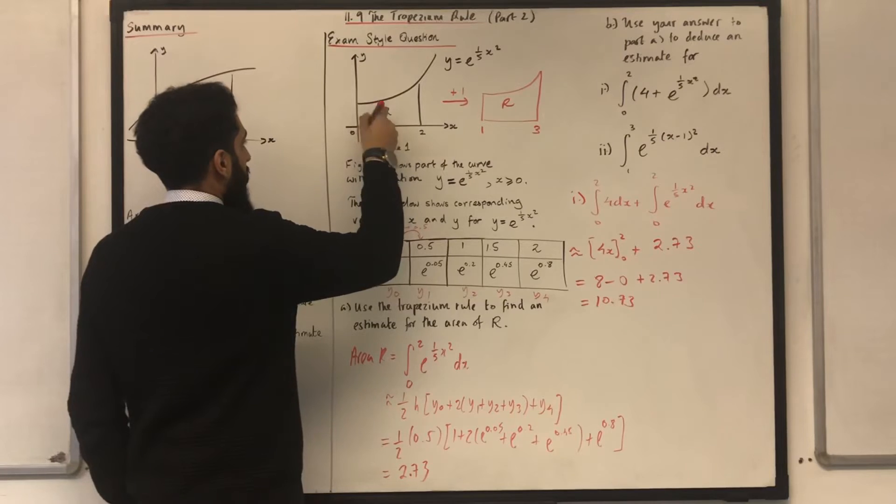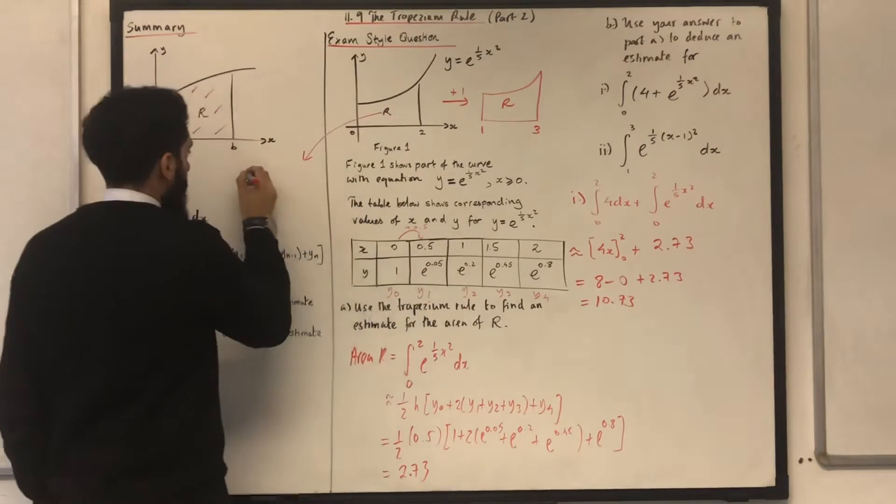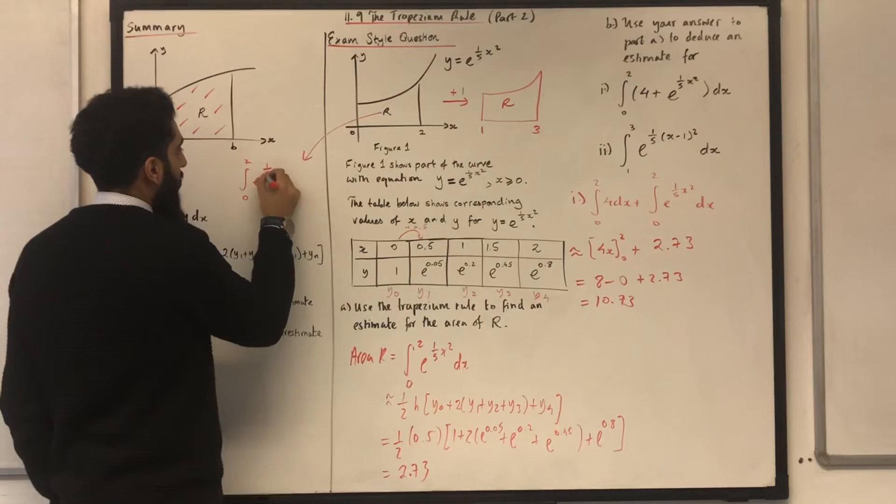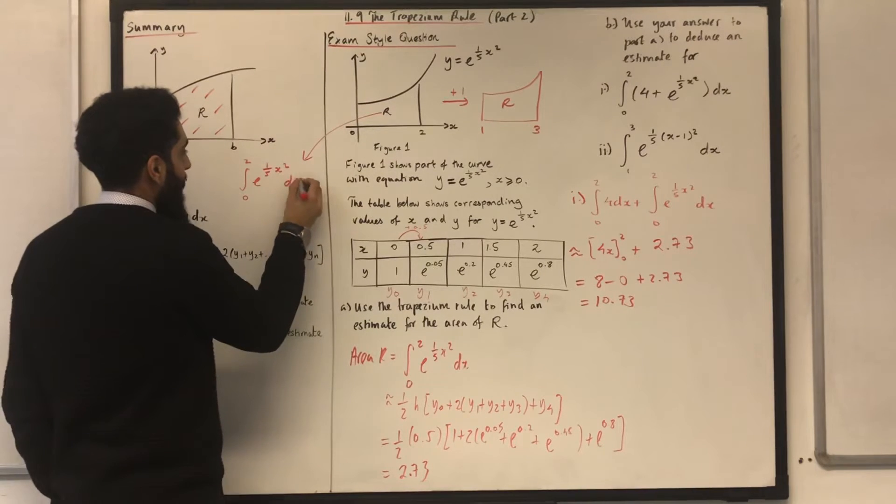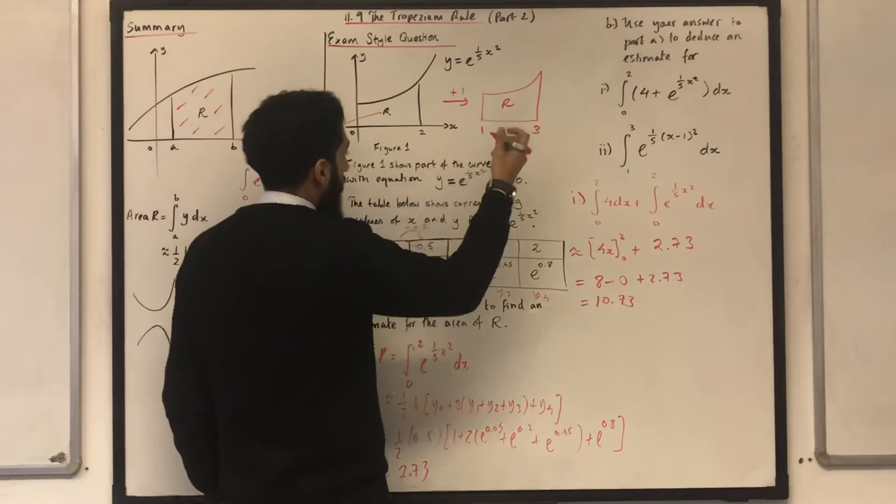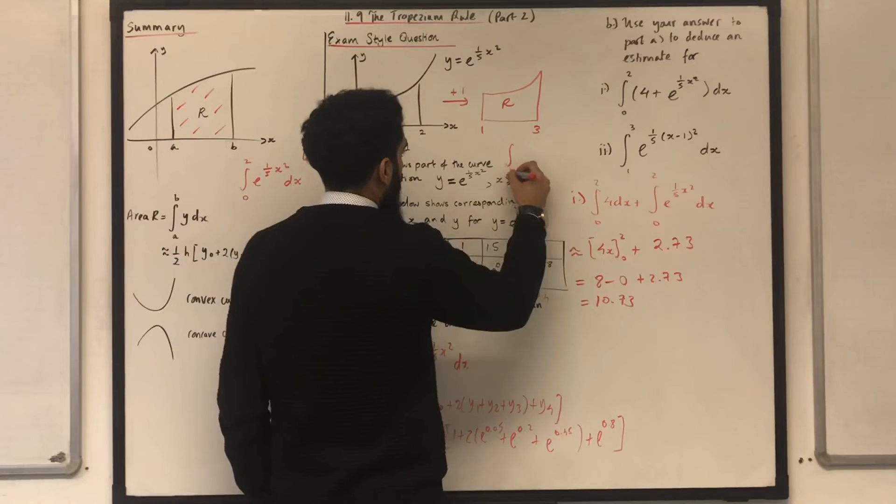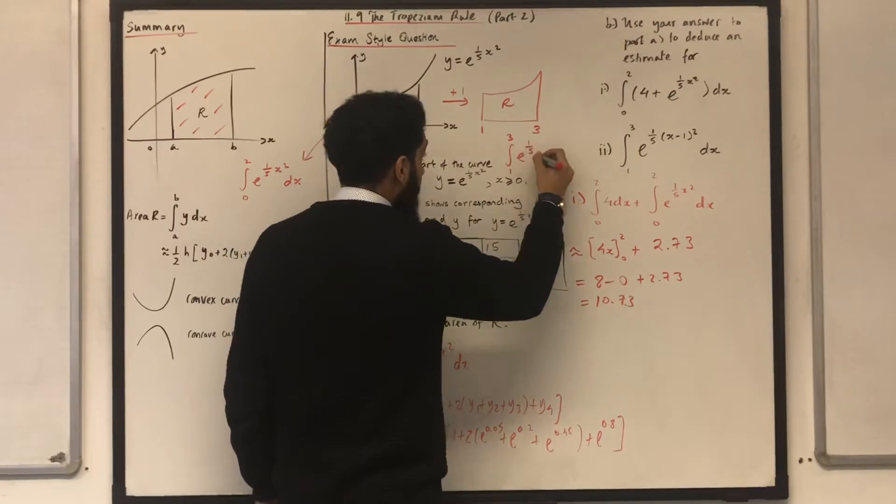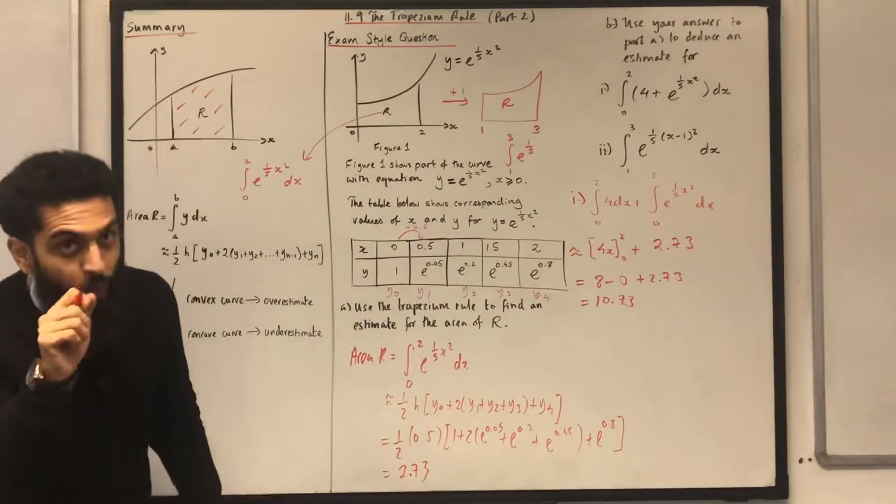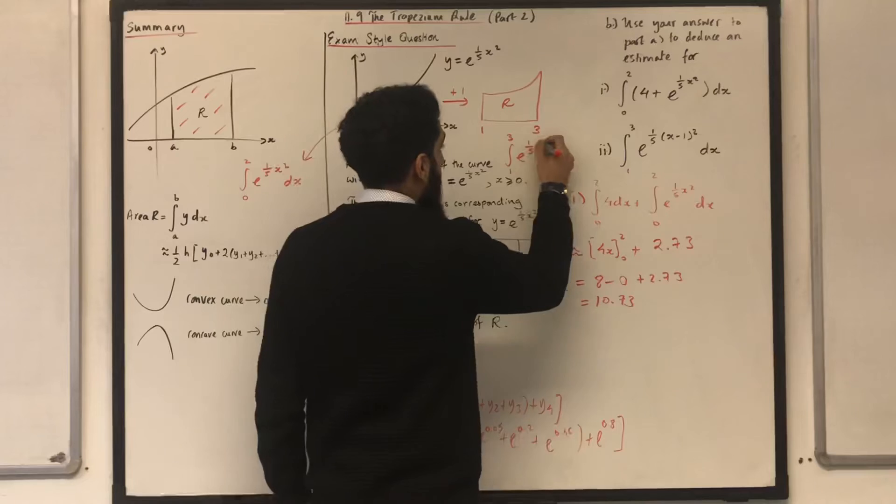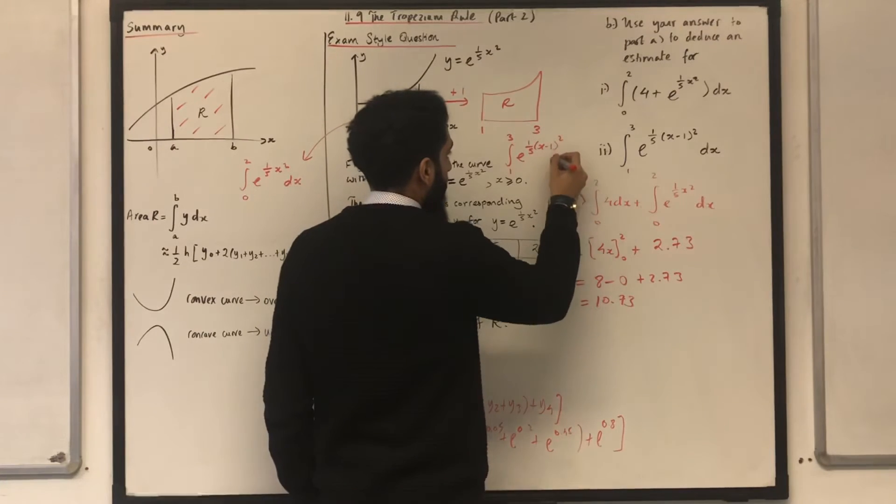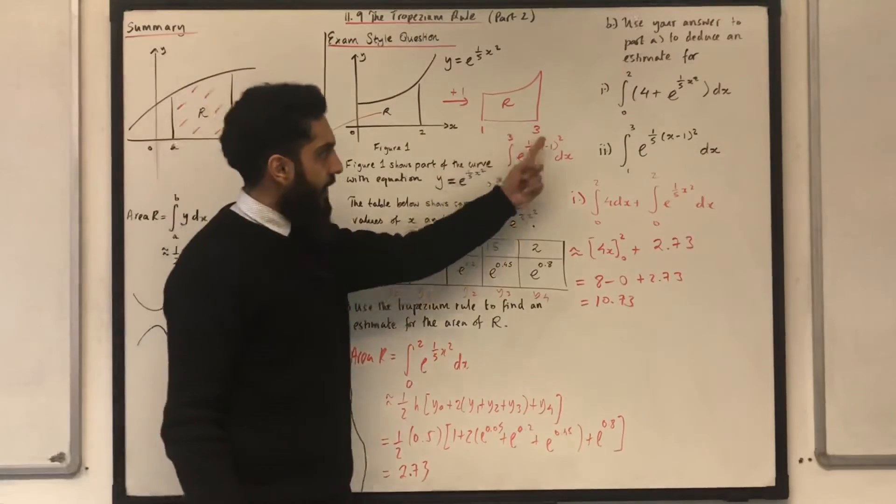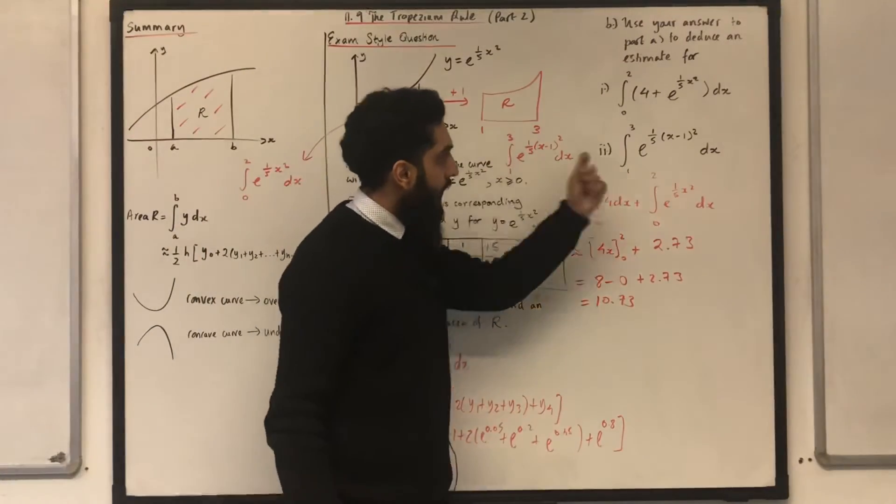This particular area R represents the integral from 0 to 2, e to the power 1 over 5x squared dx. What does this area R represent? It will just be the integral from 1 to 3 of e to the power 1 over 5, not x squared, guys. It will be in bracket x minus 1 squared dx. And that is precisely the integral that I want to estimate in part 2.